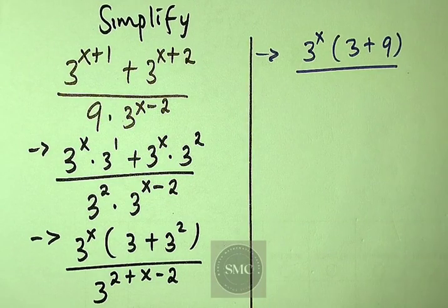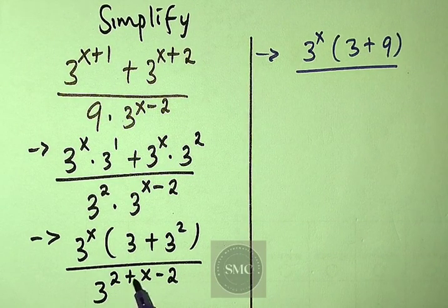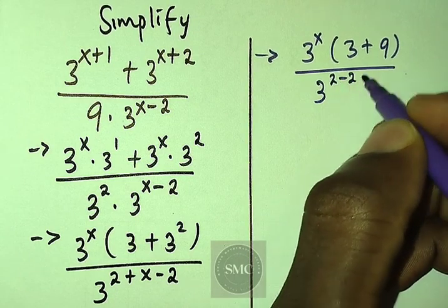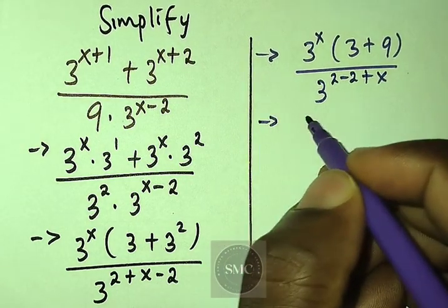Then over here, from the law of indices, this 2 minus 2 is 0, plus x. So we are going to be having 3 to power x.